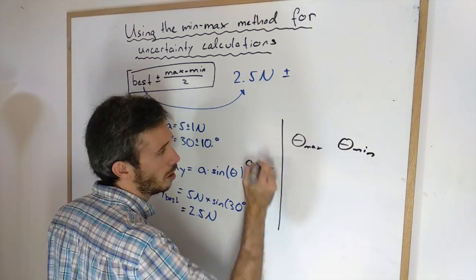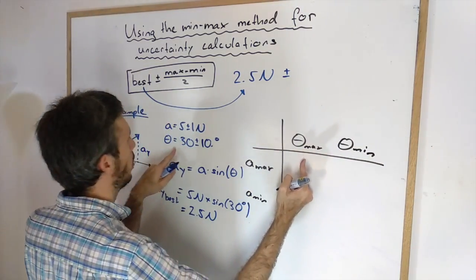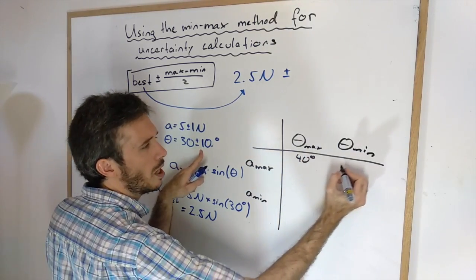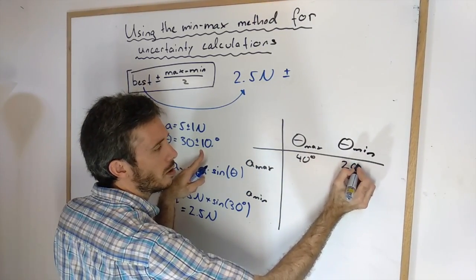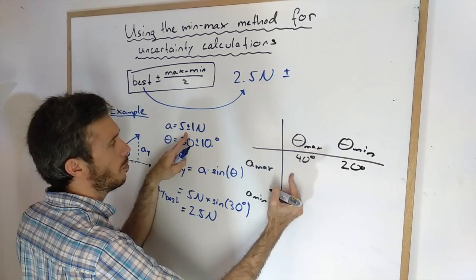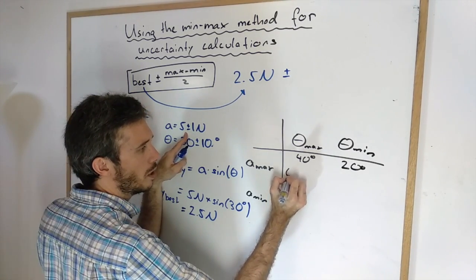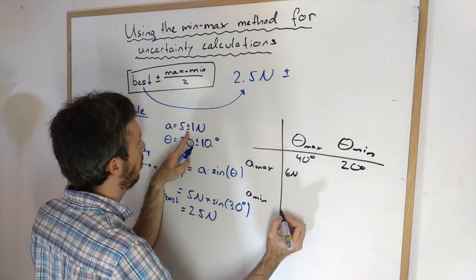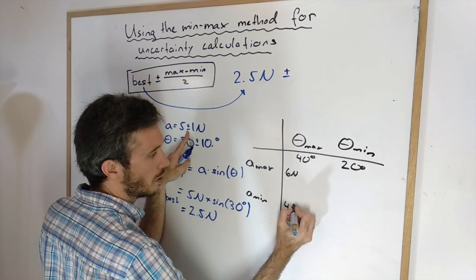And then I make a little square here and I write my highest angle that was 40 degrees. My lowest angle 30 minus 10 is 20 degrees. My biggest amplitude 5 plus 1 is 6 newtons. My smallest amplitude is 4 newtons.